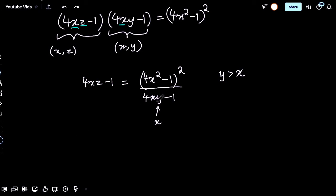But we see that this would become 4x squared minus 1 whole squared over 4x squared minus 1, which would then be 4x squared minus 1 only. And we know that this is bigger than 4x squared minus 1. This clearly implies that x is greater than z.